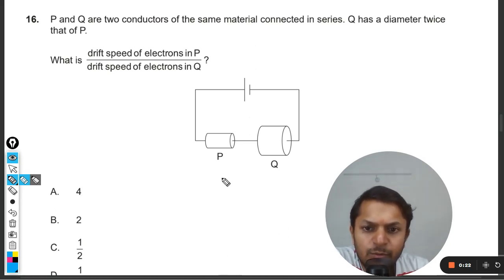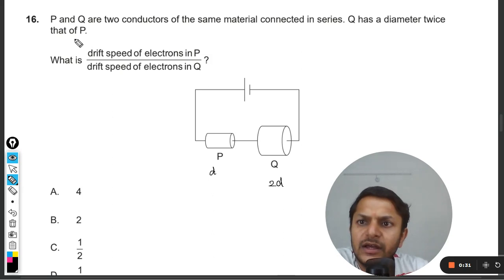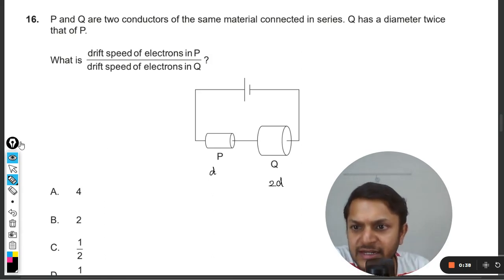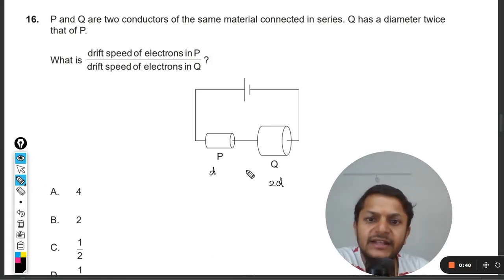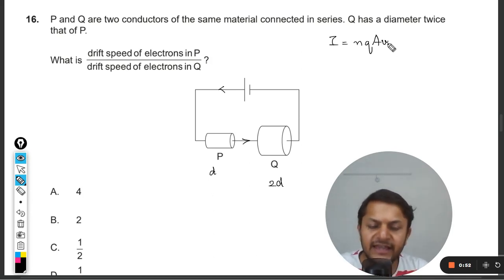What is the ratio of drift speed of the electrons in P to the drift speed of the electrons in Q? They are in series, and that is why the current which is passing through both of them is same. So we know that the formula is I equals n q A v, where v is the drift velocity we want to comment on.